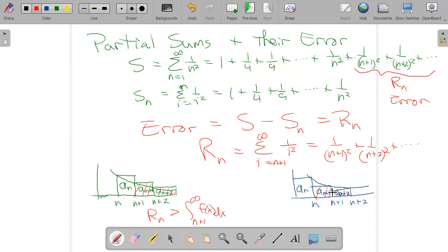Starting with this term right here, that's my R sub N. This time my R sub N is less than the integral starting at N. So what this does here, looking at left-hand versus right-hand endpoints, it puts the remainder in between these two intervals.